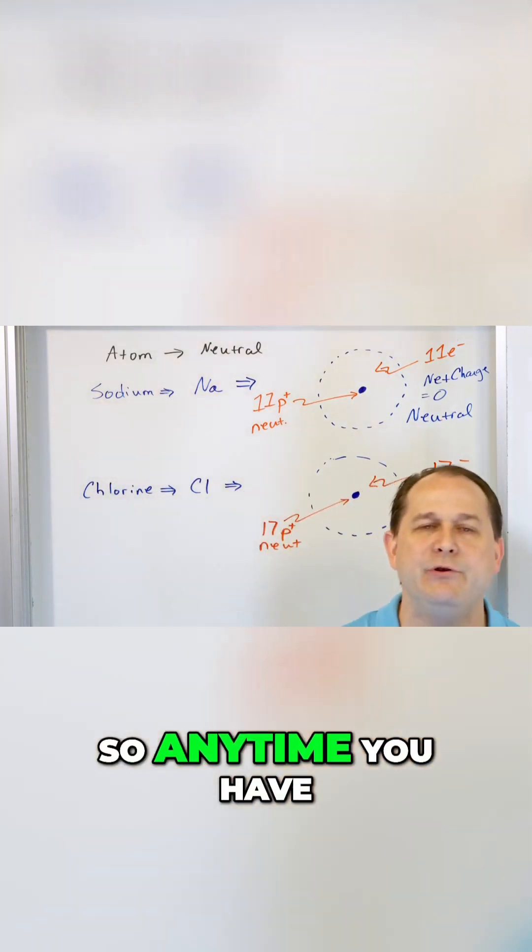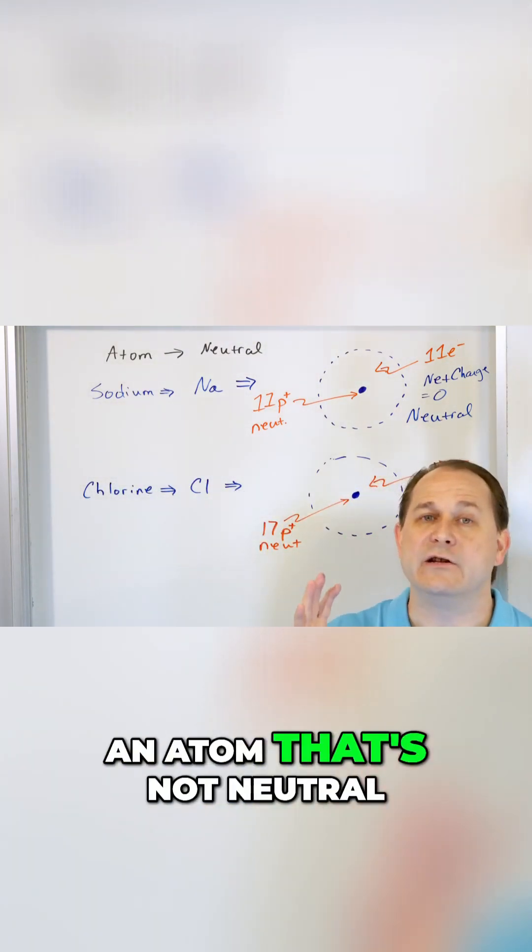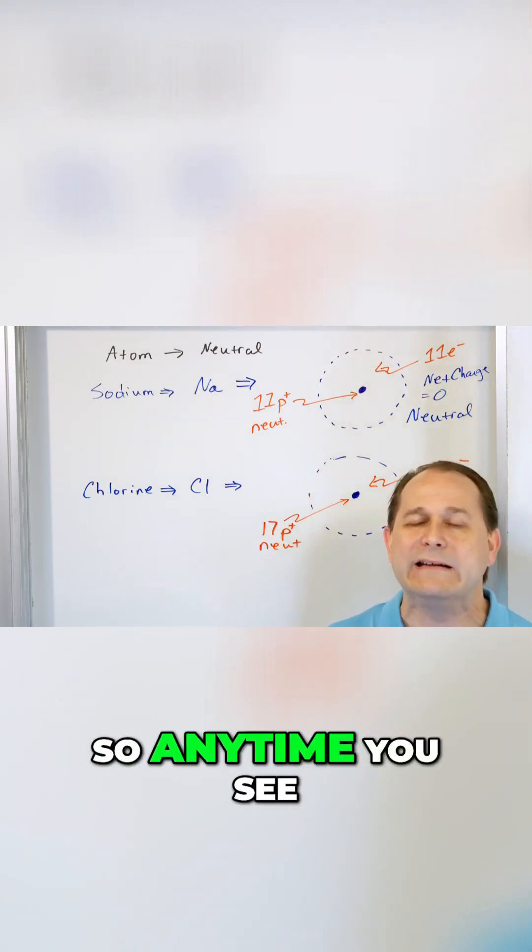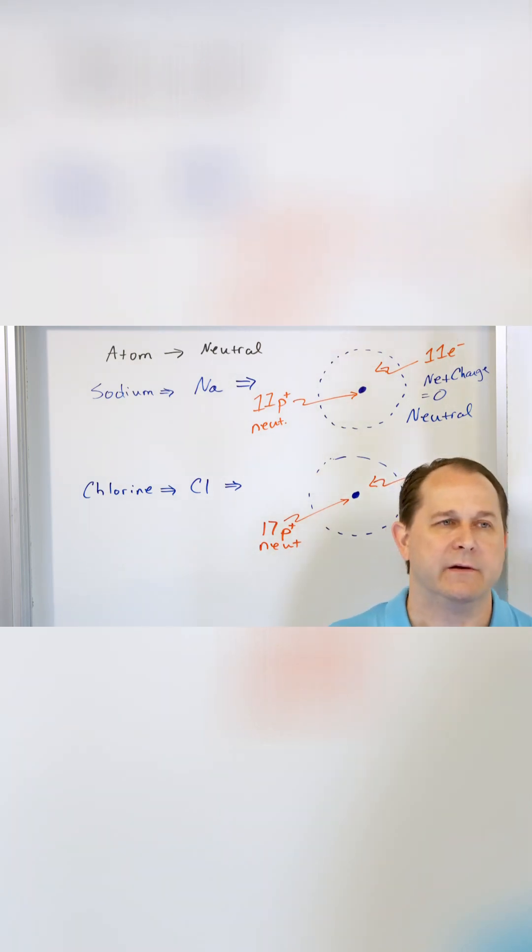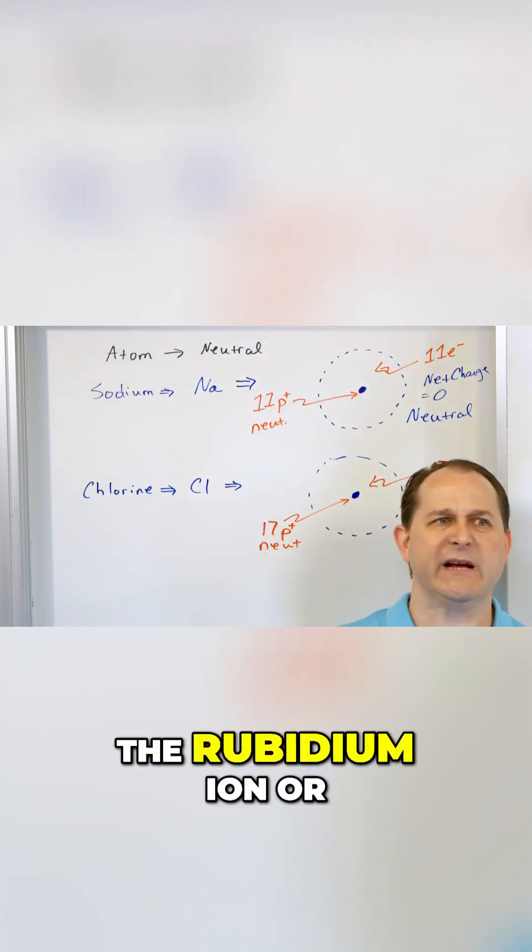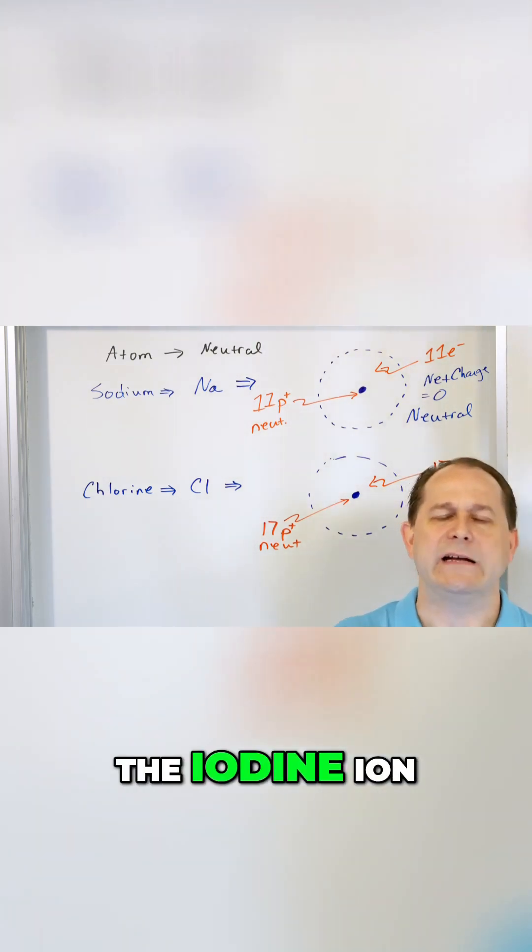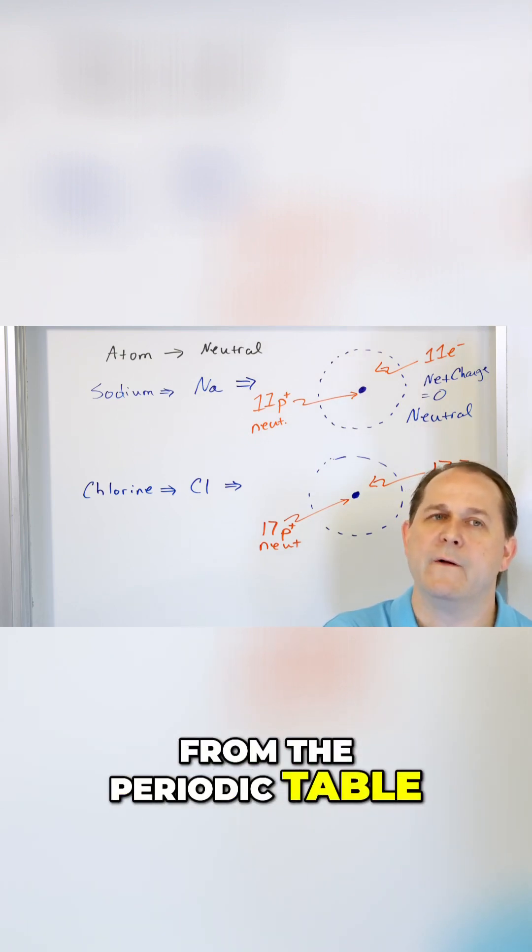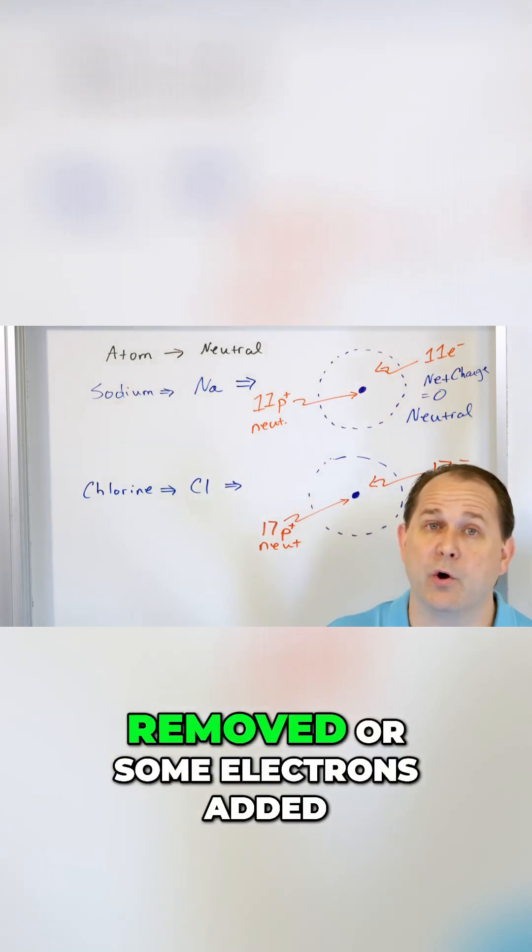So anytime you have an atom that's not neutral, we have another word for it. We call it an ion. So anytime you see the sodium ion or the rubidium ion or the iodine ion, you know that it's basically just an atom from the periodic table with either some electrons removed or some electrons added.